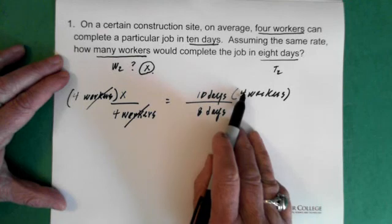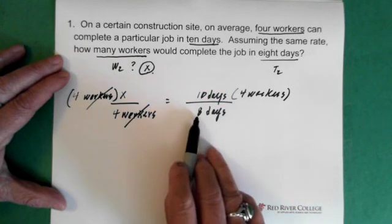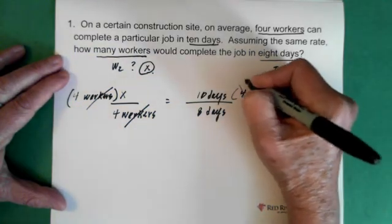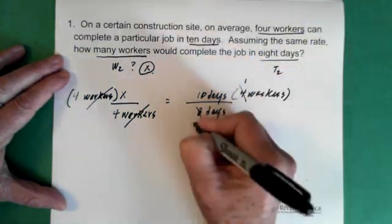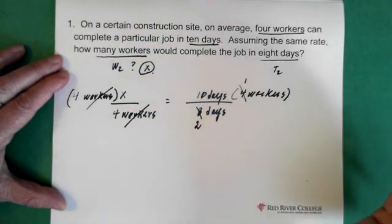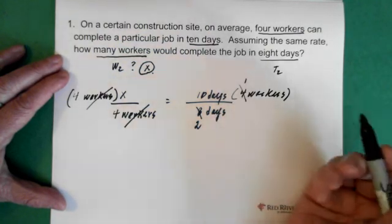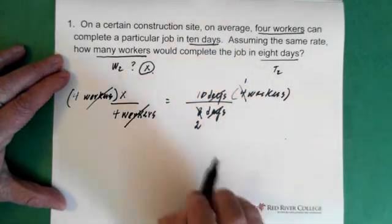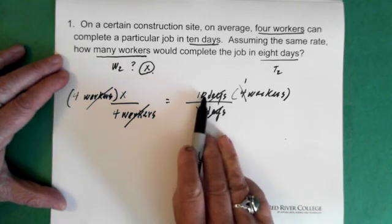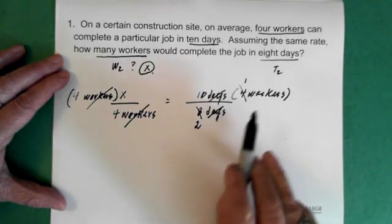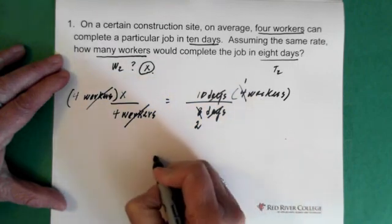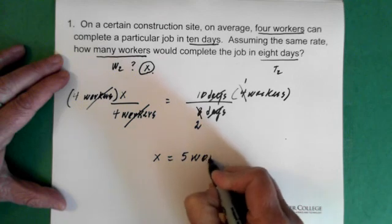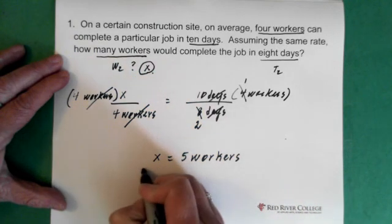Now we can see here that we have 4 divided by 8. They're both divisible by 4, so I'm just going to cross this out and make that a 1, cross this out and make that a 2. The days and the days cancel, because days divided by days is 1. So now we have 10 divided by 2 workers. So x equals 5 workers, and that would be the answer.